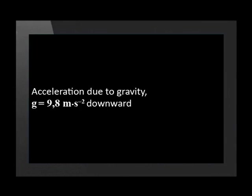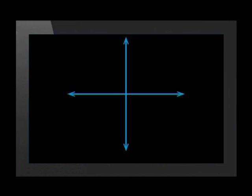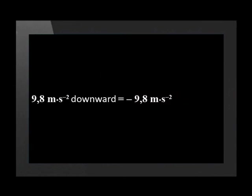That is why the direction of acceleration due to gravity g is always downward. Acceleration is a vector quantity, so it has direction. In vertical motion we work along the y-axis of a Cartesian plane. We often take up as positive and down as negative. If we take down as negative, then 9.8 meters per second squared downward is the same as minus 9.8 meters per second squared.